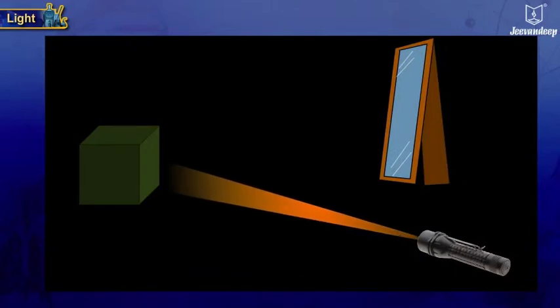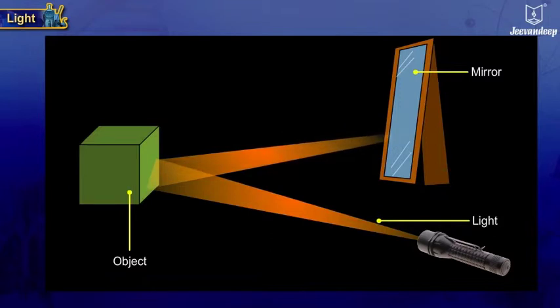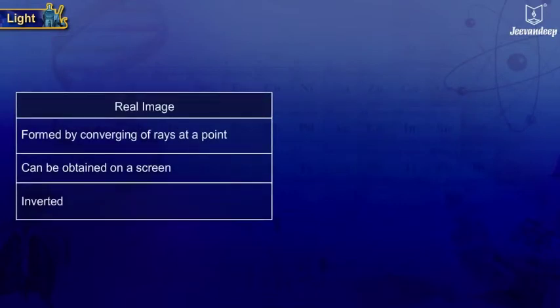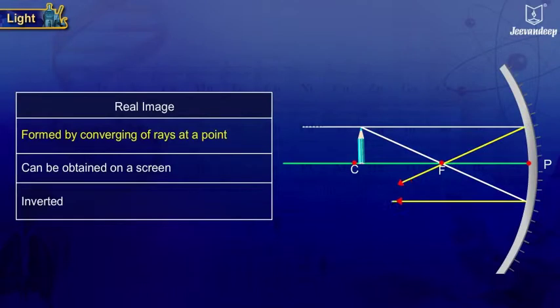An image is produced by reflection of light from the object and their reception on a surface. An image can be real or virtual. A real image is formed by converging of rays at a point and can be obtained on a screen.